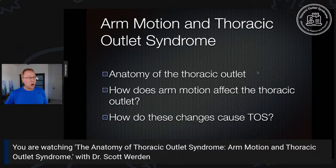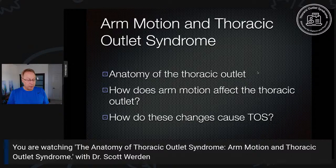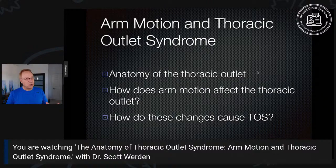It's very important to know this material. TOS is a form of entrapment neuropathy — we get these all over the body. Carpal tunnel syndrome is one you've probably heard of. But the thoracic outlet and TOS are unique because arm motion creates a really complex extra factor that doesn't just entrap the nerve, but can do it in many different ways depending on the person, their anatomy, their musculature, etc.